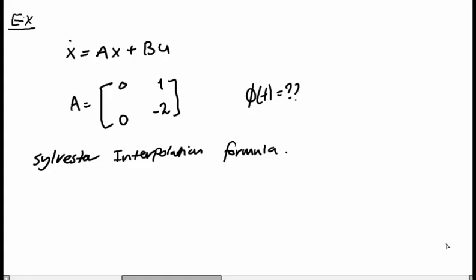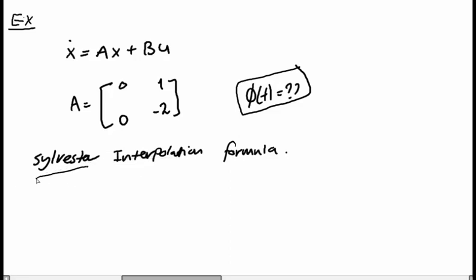Hello guys, welcome to another video. Now we have a physical system here, a mathematical model. We have a plant equation: x-dot equals Ax plus Bu. We have a matrix here with two states, so a two-by-two matrix. The problem is that we need to find the state transition matrix, Φ(t). There are many techniques for finding this state transition matrix, and now I am focusing on this method which is called the Sylvester interpolation formula.